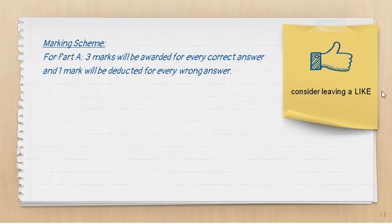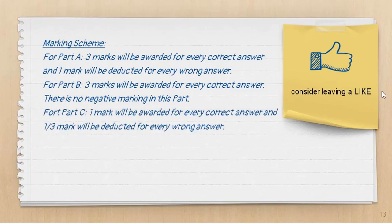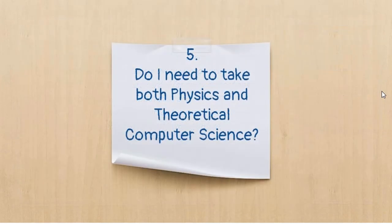For questions in Part A, 3 marks will be awarded for every correct answer and 1 mark will be deducted for every wrong answer. For Part B, 3 marks will be awarded for every correct answer and there is no negative marking. For Part C, 1 mark will be awarded for every correct answer and one-third mark will be deducted for every wrong answer.